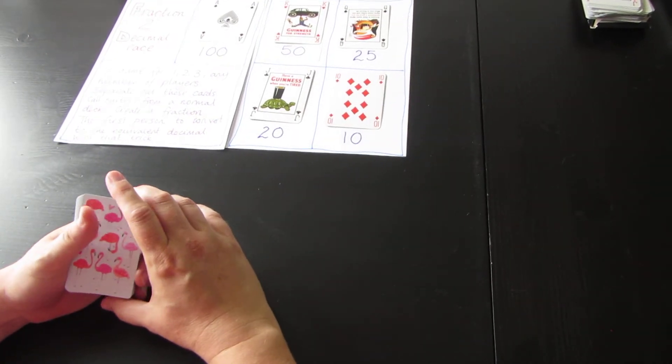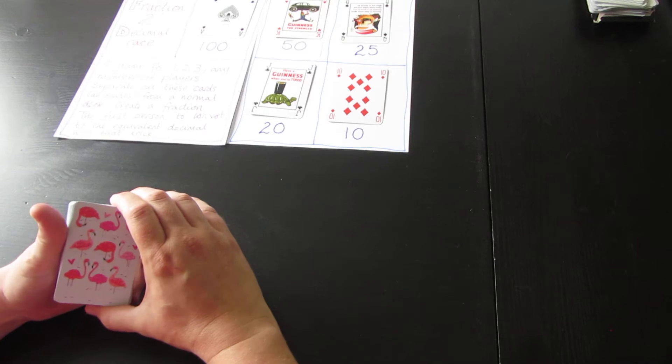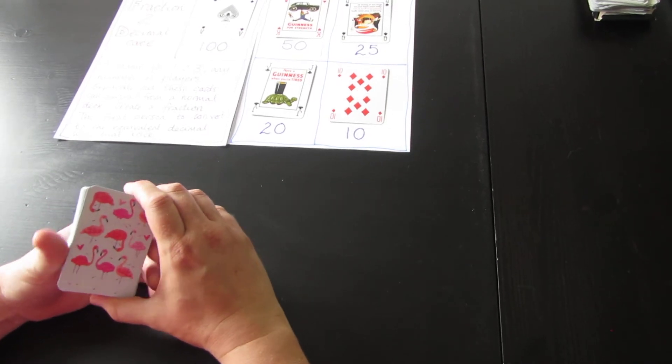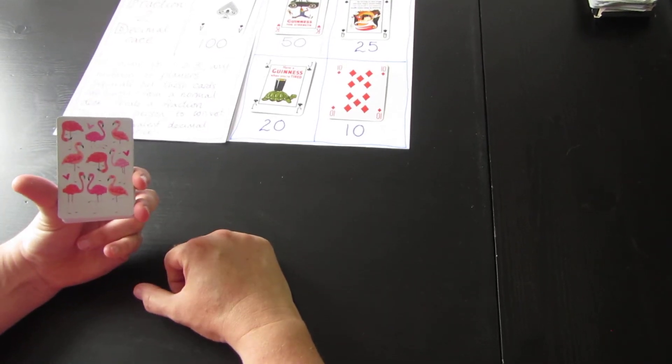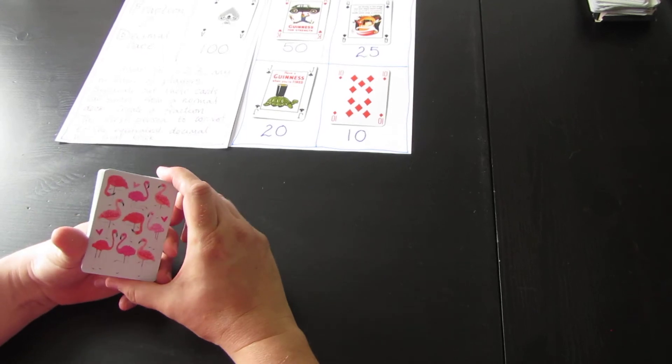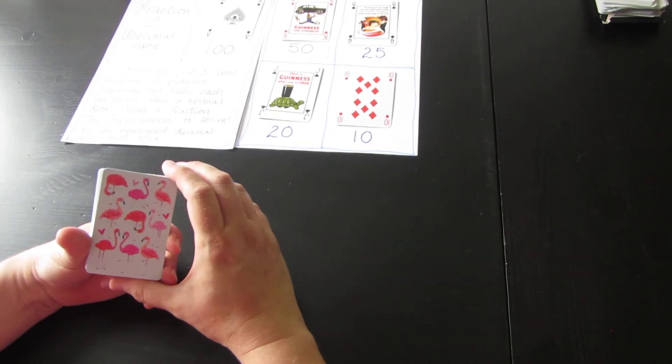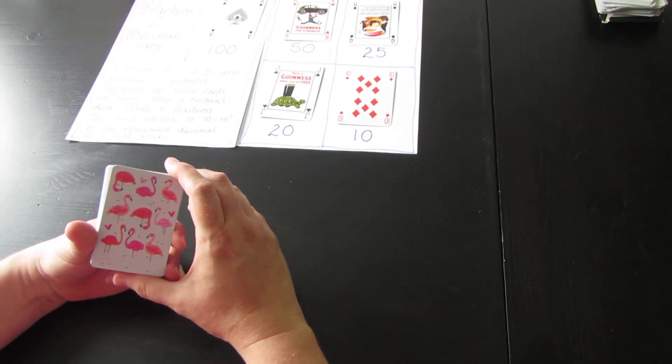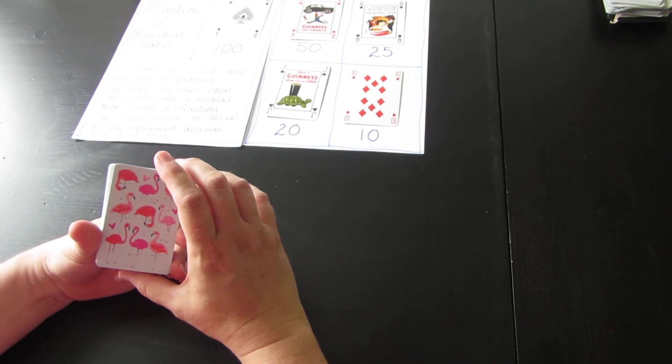Hello and welcome to this week's game. This week is a card game called Fraction to Decimal Race. You need an ordinary pack of cards - I'm going to use my favorite flamingo cards, but any ordinary pack of playing cards will be just fine. The first thing you need to do...